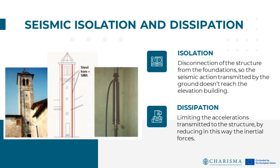Seismically isolated buildings have a flexible isolation layer which limits the transfer of forces from the ground to the superstructure. Base isolation, also known as seismic isolation, is a state-of-the-art method that constitutes one of the most effective means of protecting a structure against earthquake forces. A collection of structural components called isolators are used to decouple, to a large extent, the superstructure from the base or substructure that rests on shaking ground, thus protecting the integrity of the building. Energy absorption in the seismically isolated level can further reduce these forces.